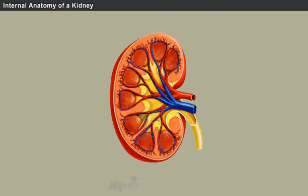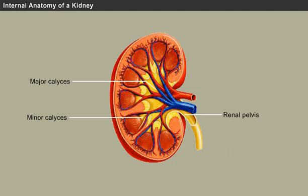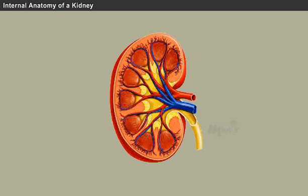Each renal papilla drains into a collecting pool called a minor calyx. Several minor calyces connect to form a major calyx, and all major calyces connect to the single renal pelvis, which connects to the ureter. The central part presents a deep longitudinal fissure bounded by prominent overhanging anterior and posterior lips called the hilum, which transmits the vessels, nerves, and ureter.